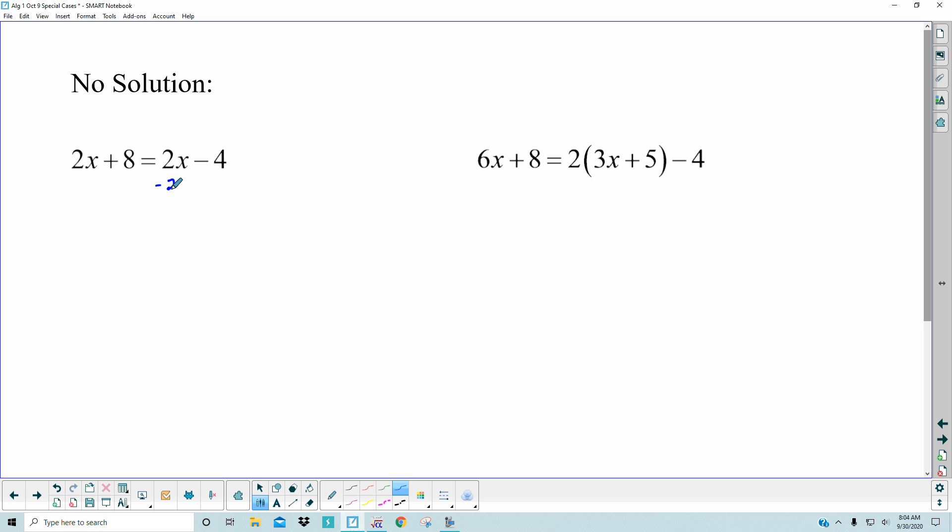Usually I start by collecting the x's. So if I cut this 2x off and brought it over to the left side, it cancels that one out. And you're left with 8 equals negative 4. Well, how often is that true, that 8 equals negative 4? It's never true. So it means there's no solution to this problem. There's no answer. It can't be done.